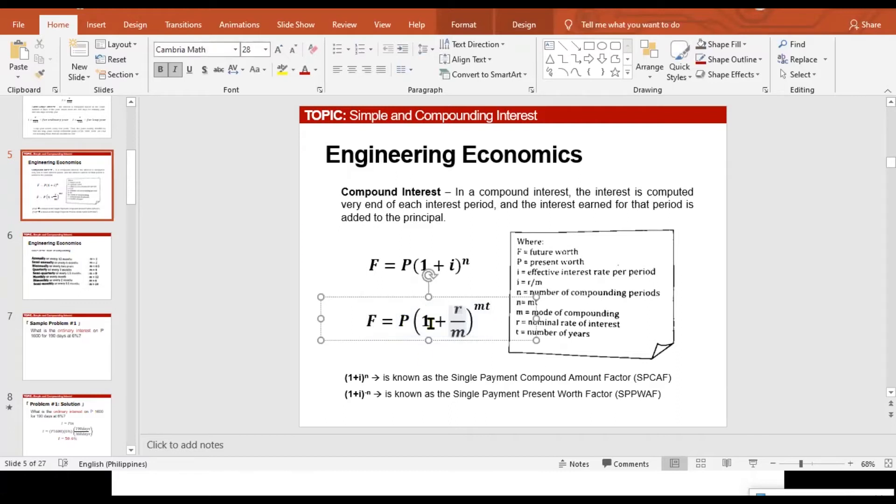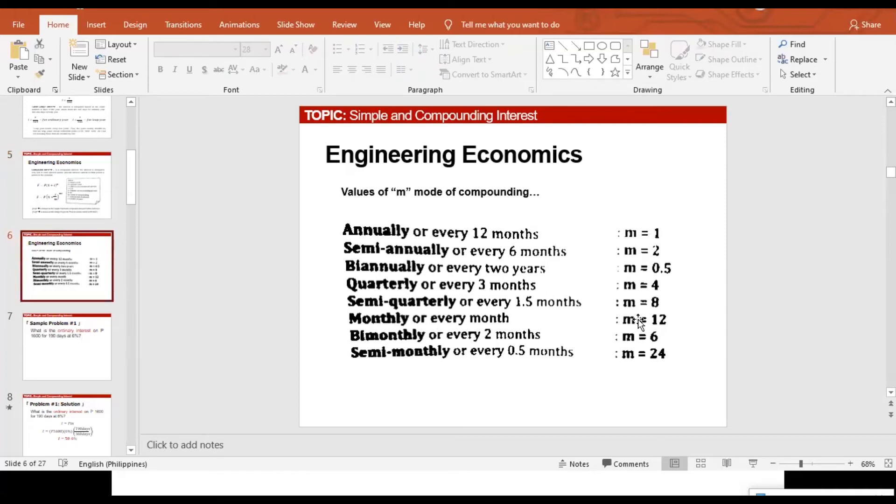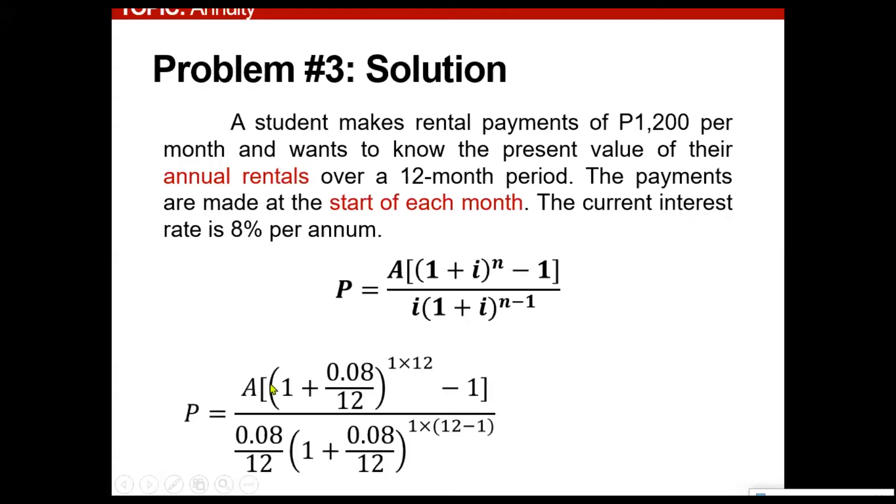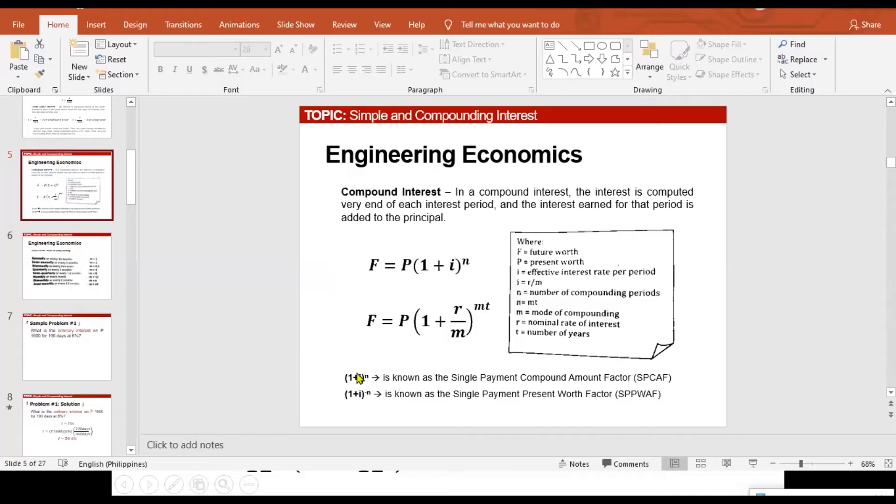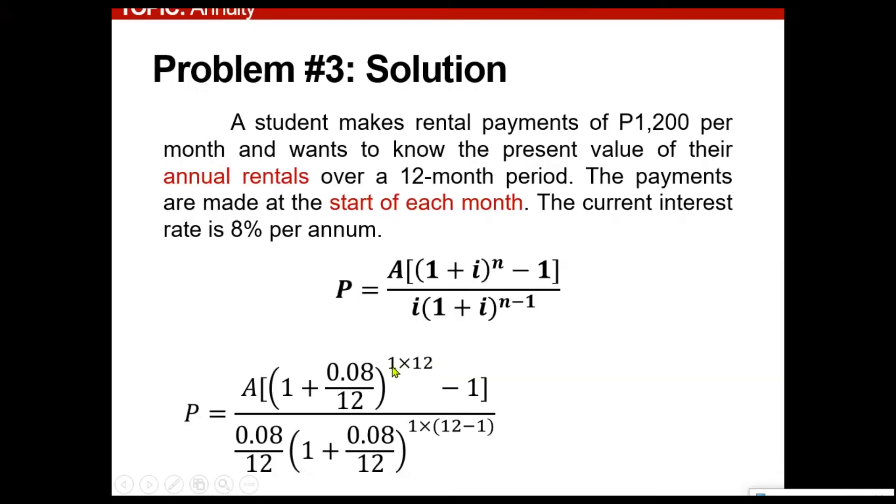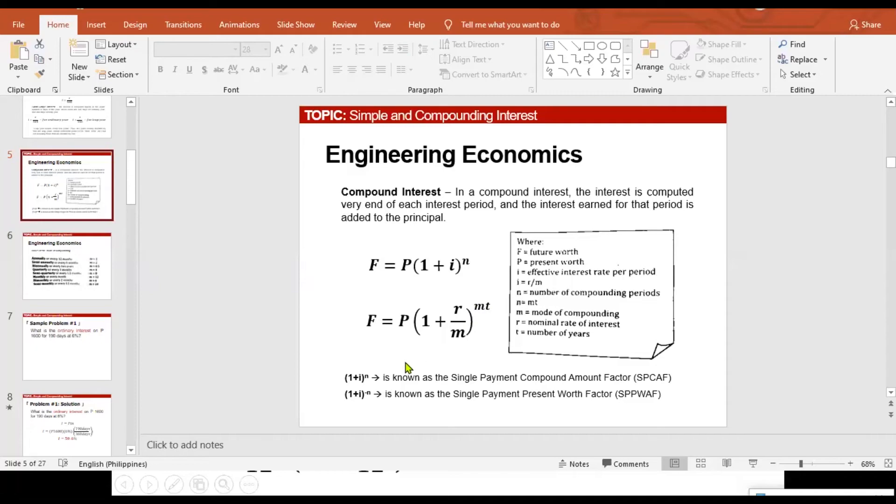F is equivalent to P, 1 plus R over M raised to MT. R over M is a mode of compounding since on our problem, it is monthly. Meaning, M is now equivalent to 12. Continuing with the discussion, as you can see, here is the solution proper. Substituting 1,200 here, 1 plus 0.08i, as you can see here, this one. R, rate of interest, 8%, and then M, mode of compounding. And then aside from that, T is actually for annum and M is for 12. That explains this one.